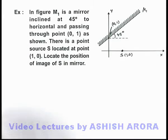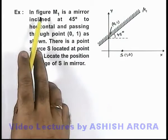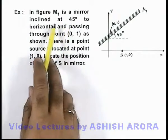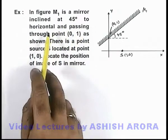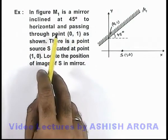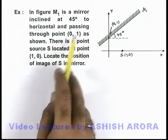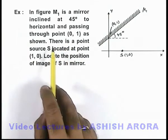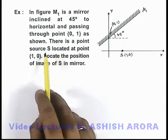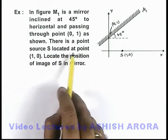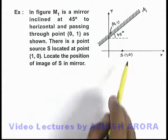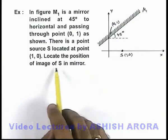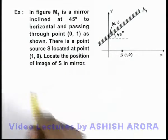In this example, figure M1 is a mirror inclined at 45 degrees to the horizontal, passing through the point (0, 1) as shown. There is a point source S located at point (1, 0), and we are required to locate the position of the image of S in the mirror.